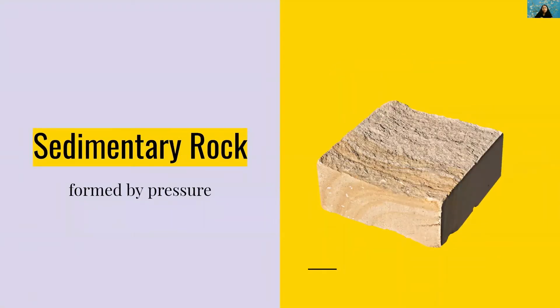Sedimentary rocks are formed by applying pressure. The rock you see here is sandstone. Over time, lots of dust, dirt, and sediment can settle on top of itself. As more layers settle, the pressure beneath gets higher and higher. The layers are essentially squashed by gravity and their own weight until they become solid rock.